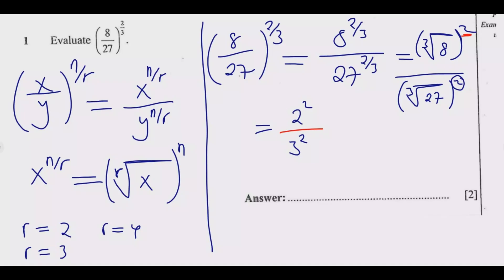This now gives me 2 times 2 is 4, then 3 times 3 is 9. So 4/9 is the answer. Once you do this you get the 2 marks. So this is how you answer the first question, which is question 1.